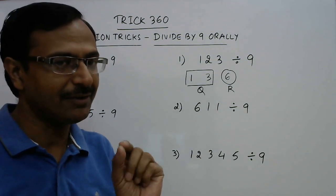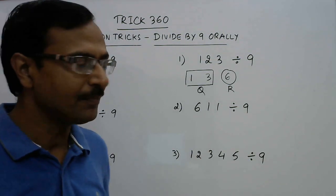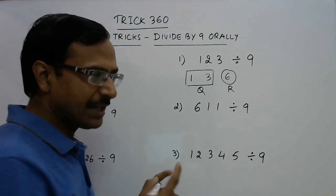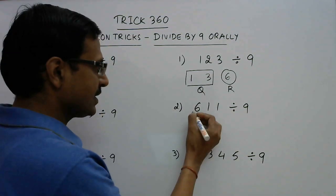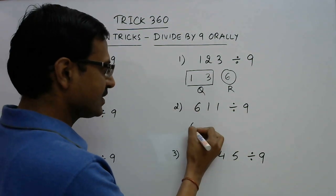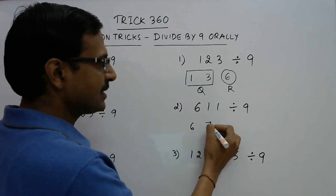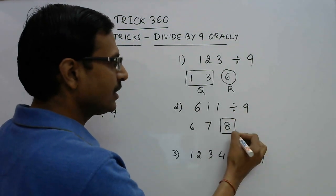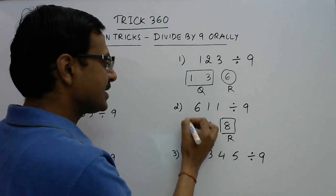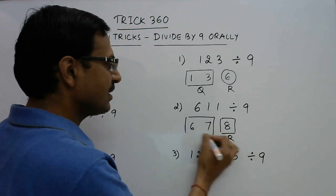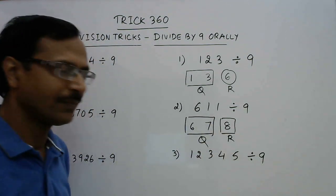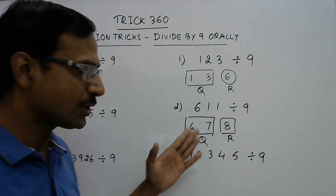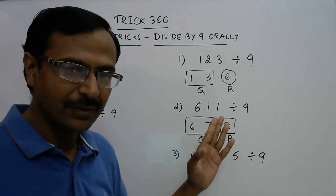Now this seems a very simple example. Let us apply it here, then we will take some complex examples. 6 comes down; 6 plus 1 is 7 and 7 plus 1 is 8. So 8 is the remainder and 67 is the quotient. Again a very simple example: 67 quotient and 8 remainder.